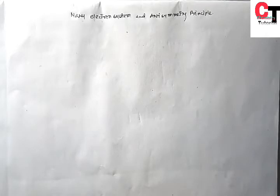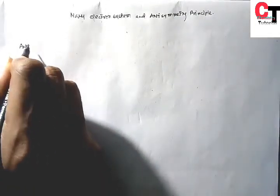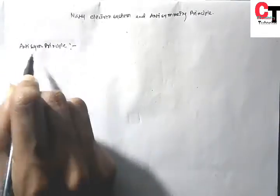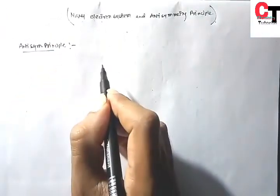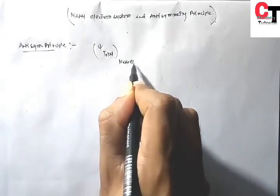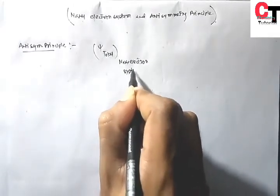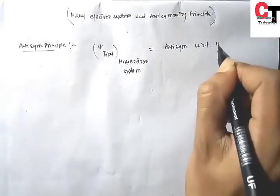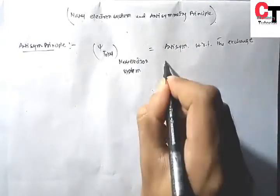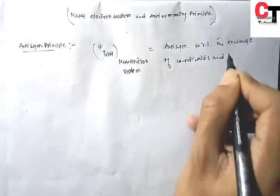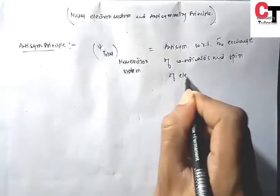In this video, we will discuss about Many Electron Systems and the Antisymmetry Principle. According to the Antisymmetry Principle, the total wave function of a Many Electron System must be antisymmetric with respect to the exchange of coordinates and spins of electrons.